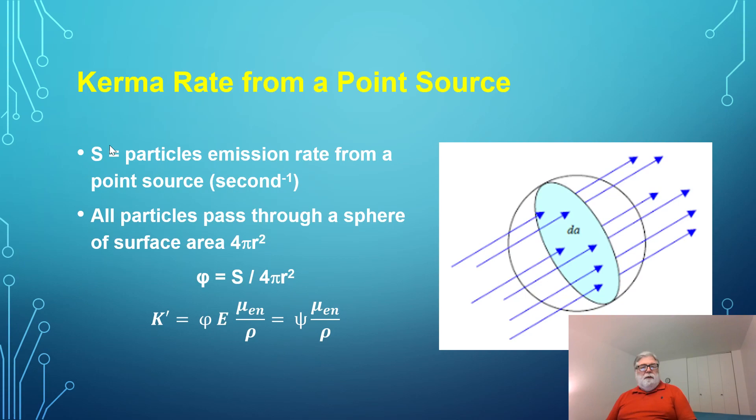The kerma rate from a point source: if S is the emission rate, number of particles per second, the dose rate or kerma rate in air is the flux times the energy times the mass energy absorption coefficient. The flux is the source emission rate divided by 4 pi r squared. All of the particles are emitted from the sphere and intercept the surface area somewhere.